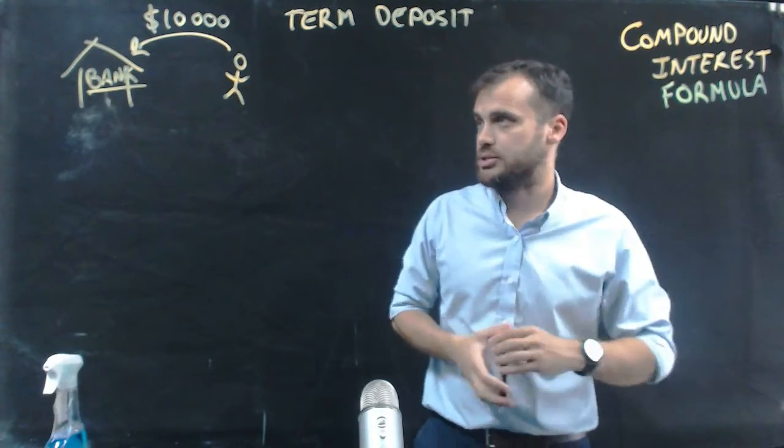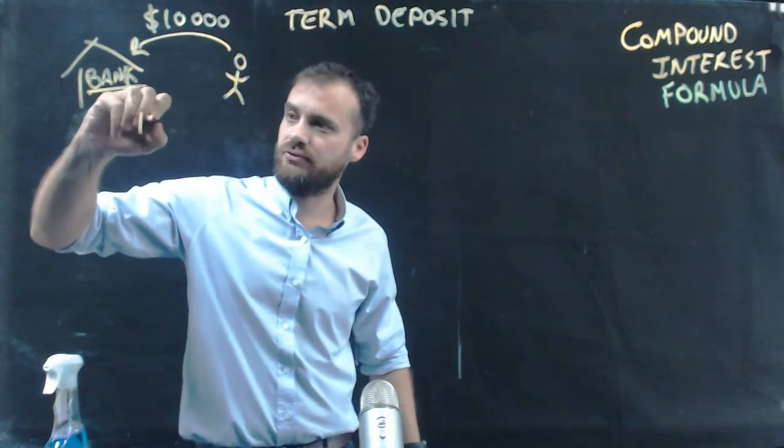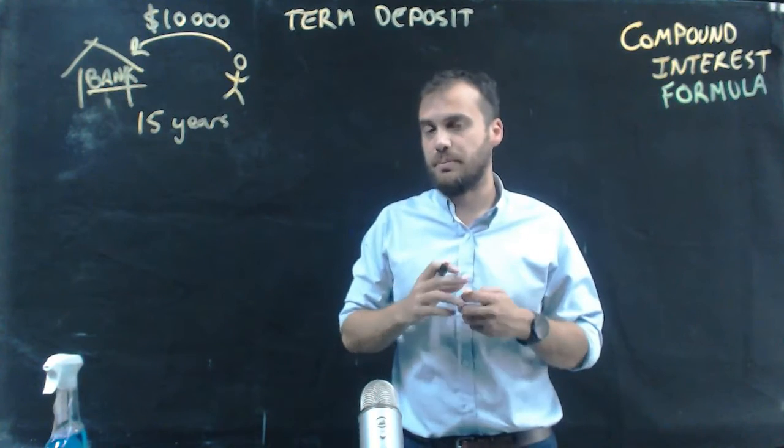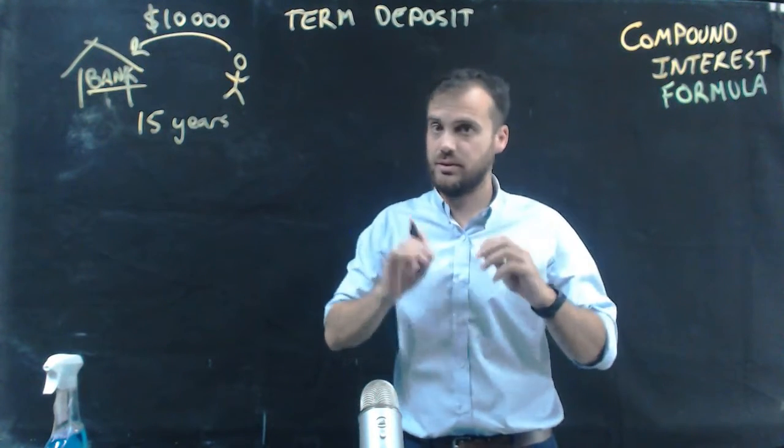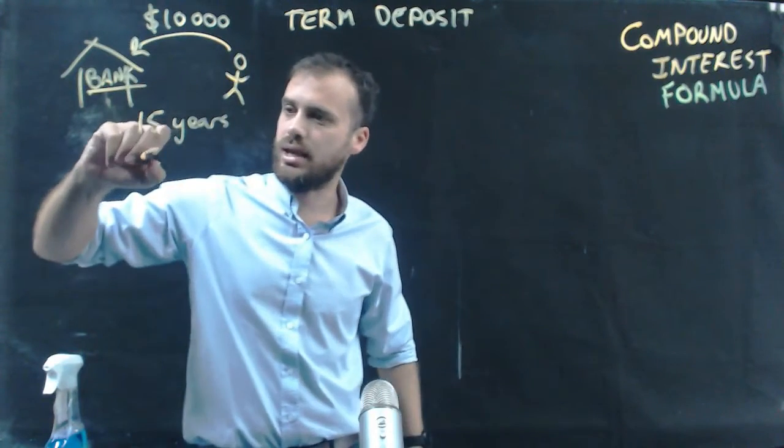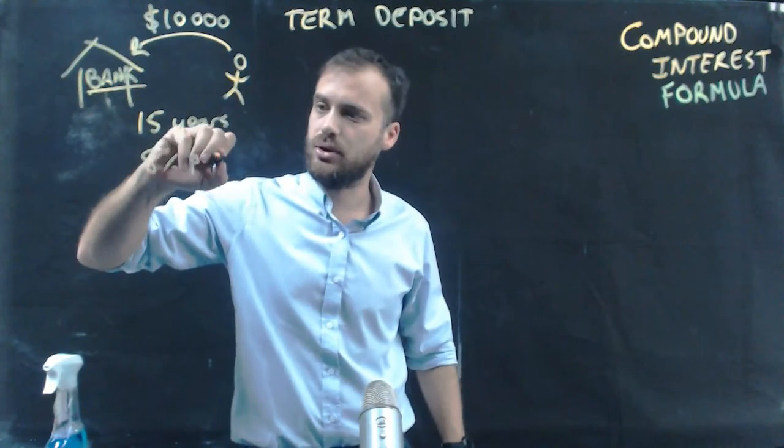Term deposit. So let's put $10,000 in the bank and let's put it in there for 15 years. And let's say that the bank says to us, yep, great, that's fantastic. Every year, we're going to give you 8% interest. That's 8% per annum. Per annum means per year.